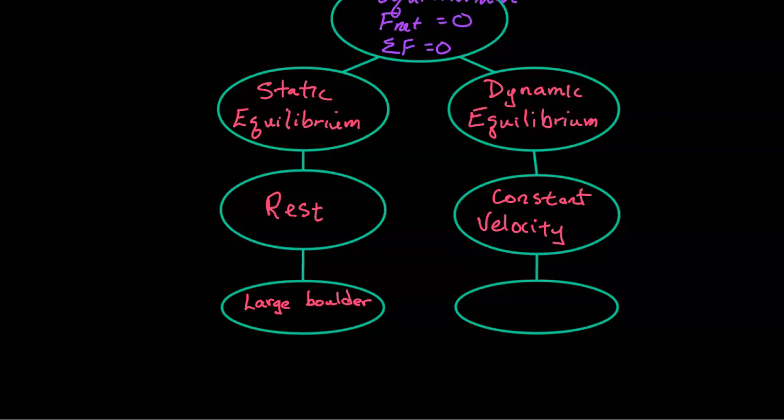A constant velocity example would be like a hockey puck. Since a hockey puck is on ice, there's very little friction. And so once it gets moving, it's going to want to keep on moving until it hits the wall or hits someone's hockey stick.